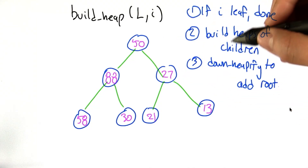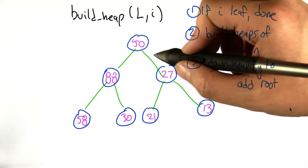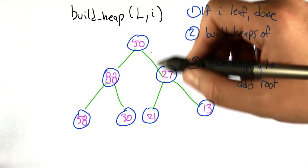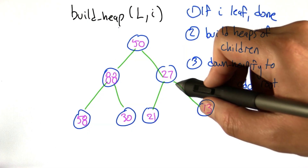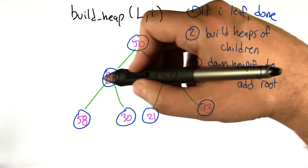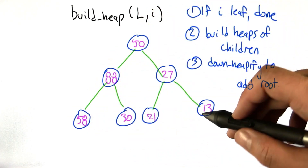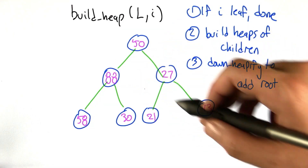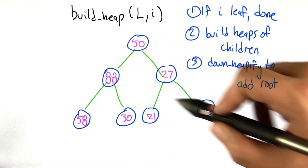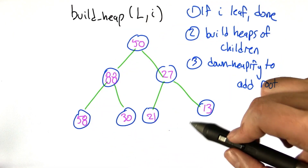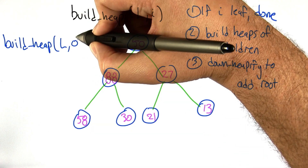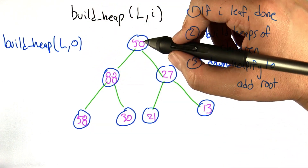Given what we have built up so far, we can actually use these pieces to build a heap from scratch. We have the heap structure — in this case with 7 nodes — filled in with random 2-digit numbers, and it's not a heap at the moment. But we can make the heap property be satisfied, and this is the way we're going to do it.